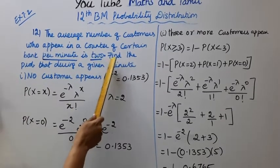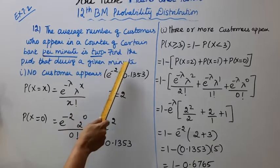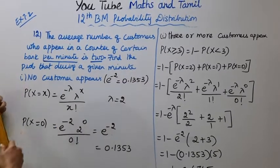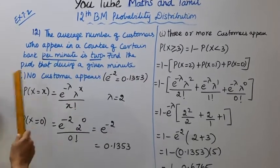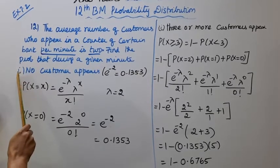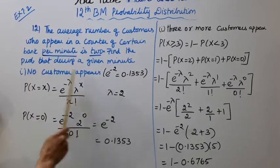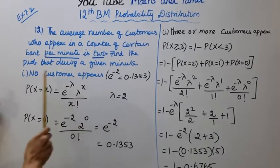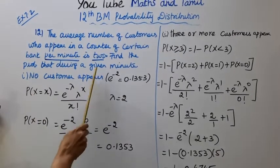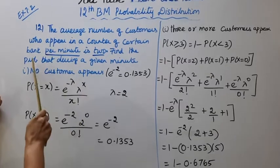Find the probability that during a given minute, no customer appears at the bank.